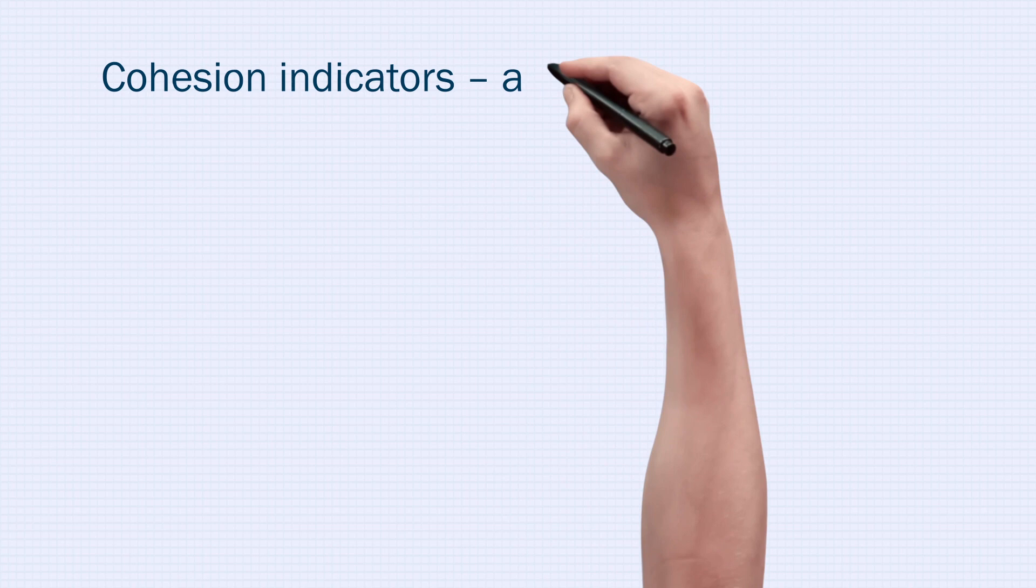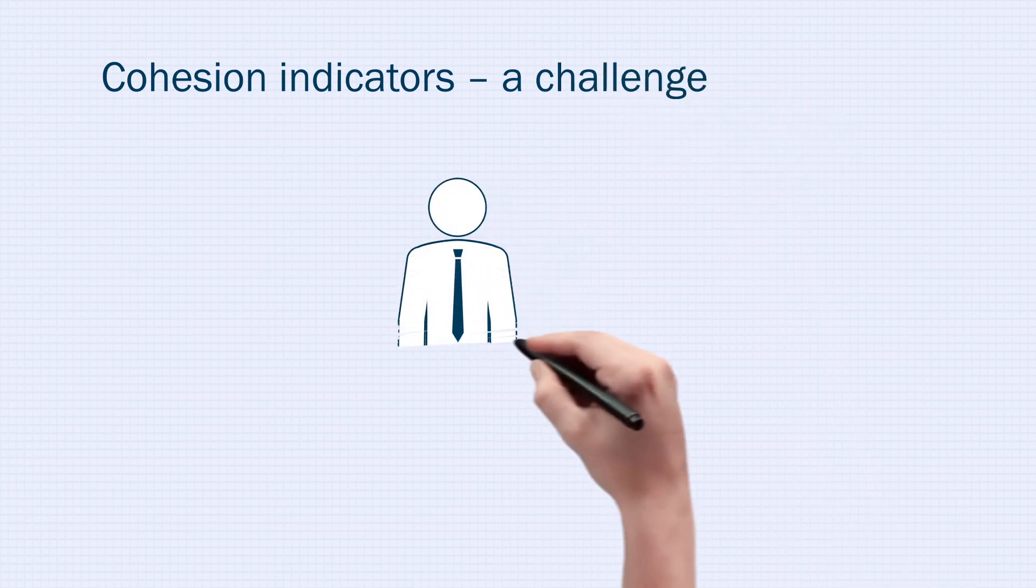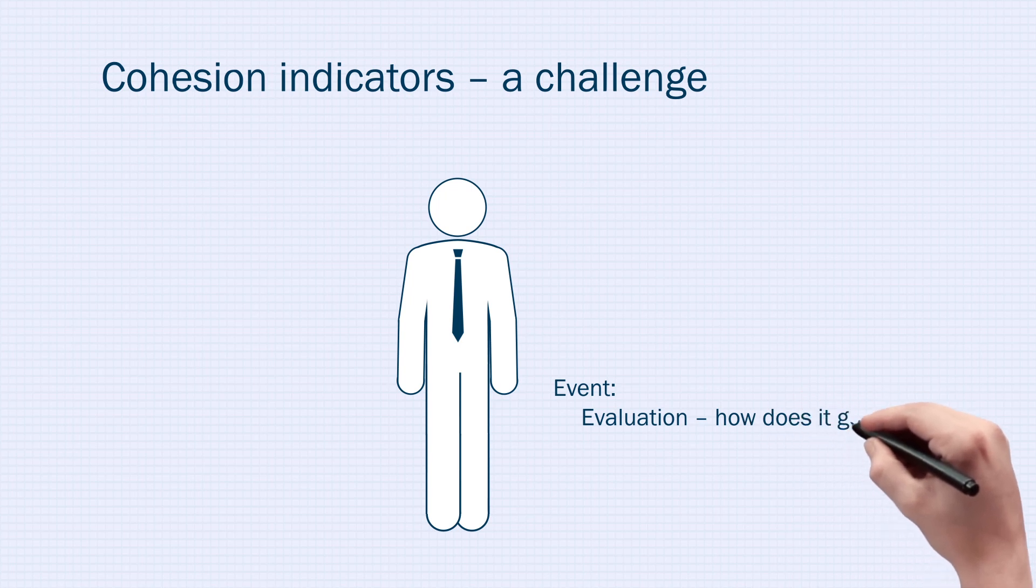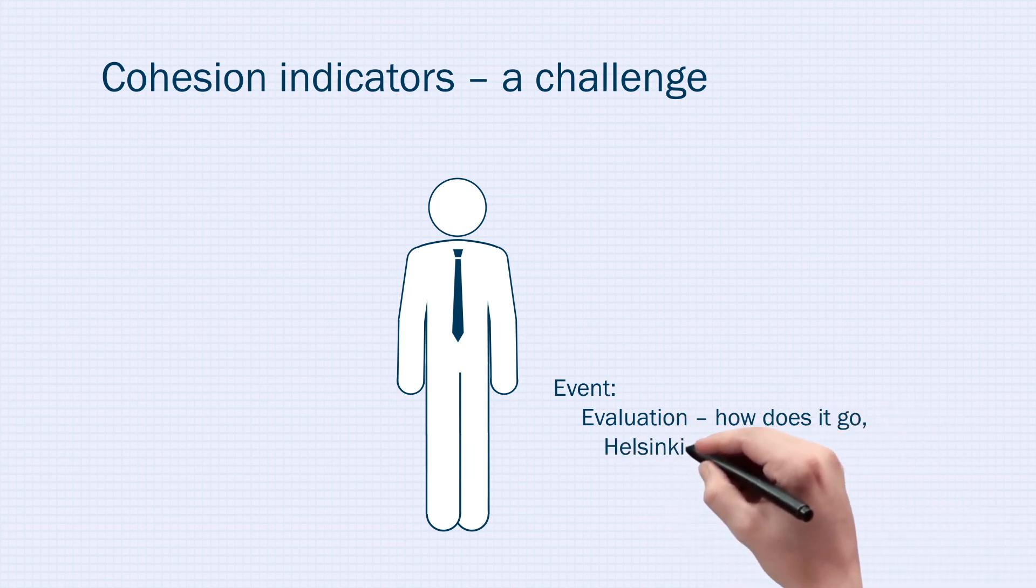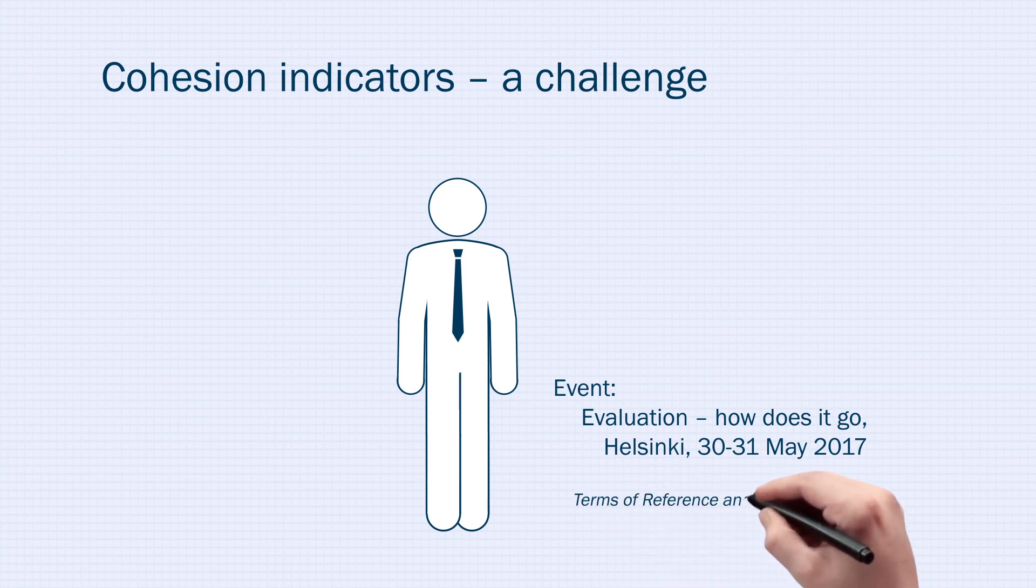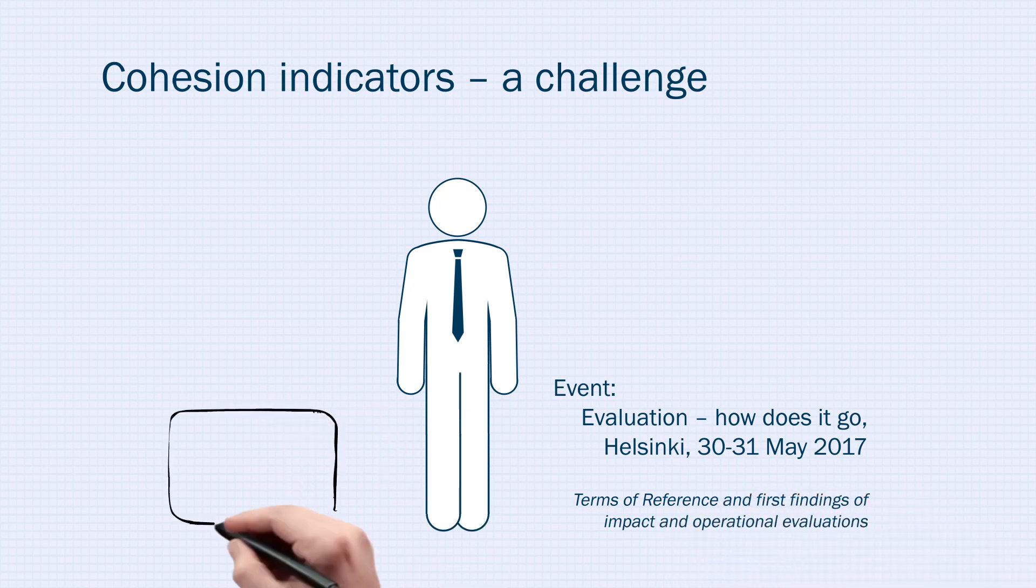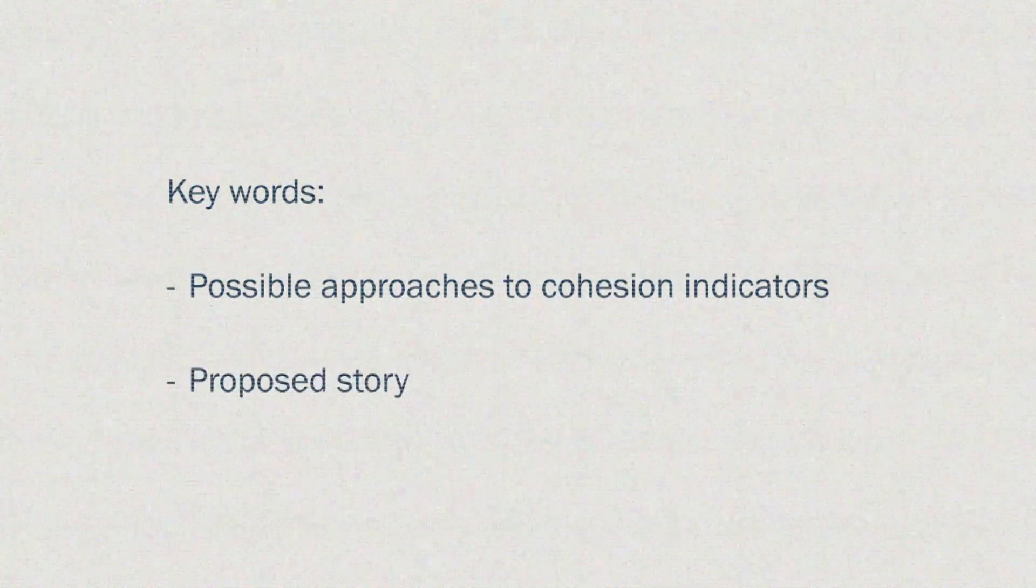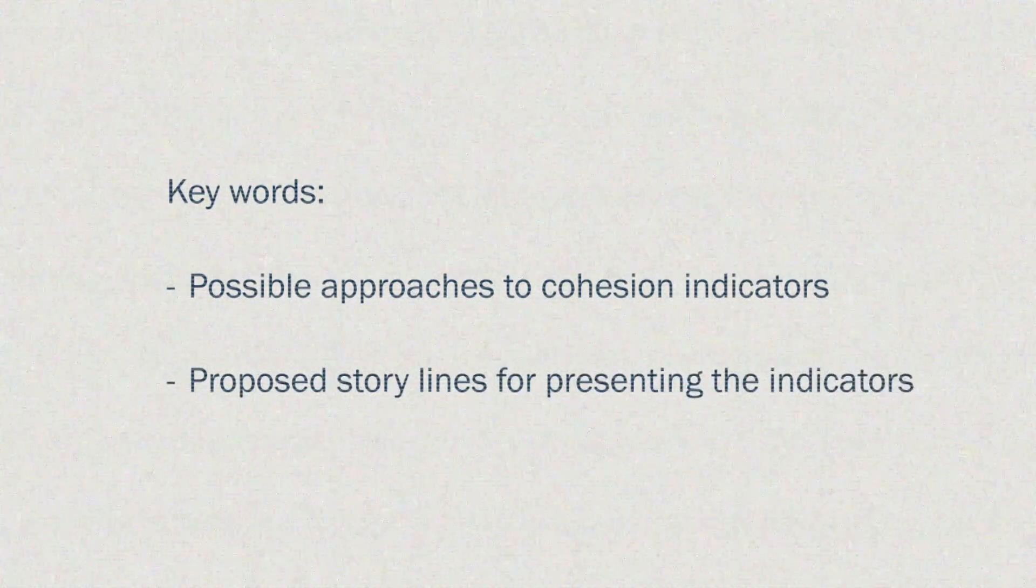Cohesion indicators - a challenge. This video was shot during the Interact event 'How did it go?' in Helsinki on the 30th and 31st of May 2017. The aim of the event was to discuss terms of reference and first findings of impact and operational evaluations. In this video, a representative of the Interreg Northwest Europe Programme explains how they came up with the indicators for measuring cohesion and which approach to it they developed.